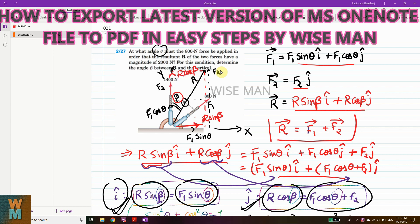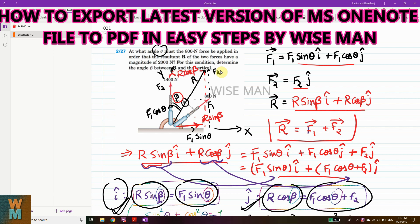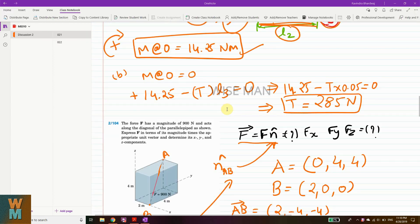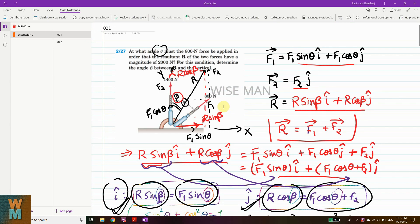Hey guys, so today we're going to see how you can export a OneNote file to a PDF file. So suppose you have a Microsoft OneNote and you have made a note in that OneNote, like a file in OneNote. So how can you export this as a PDF?